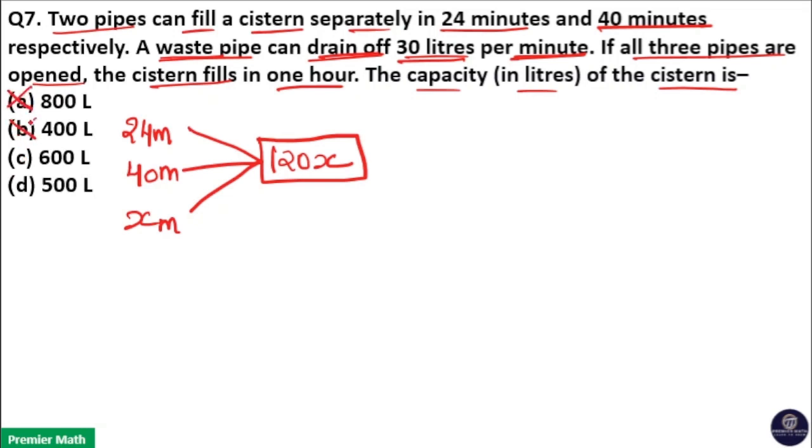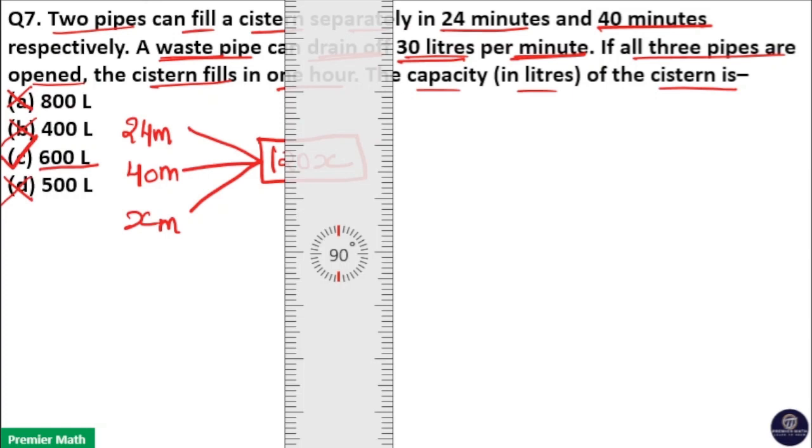800 is not a multiple of 120, 400 is not a multiple of 120, and 500 is also not a multiple of 120. So 600 is the capacity of the tank. 600 is a multiple of 120. If you want to do it another way, I will show you another method to find this answer.